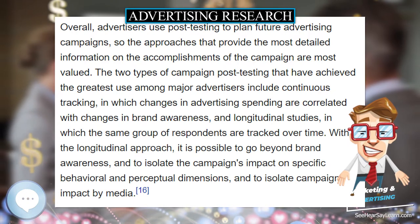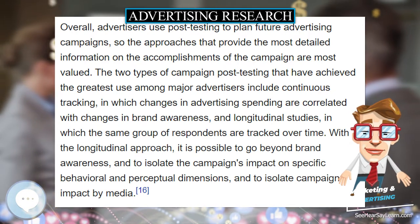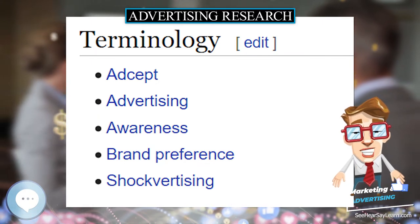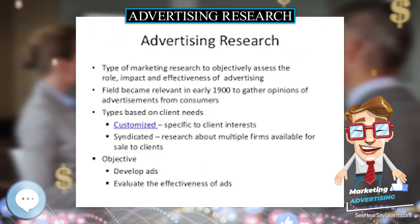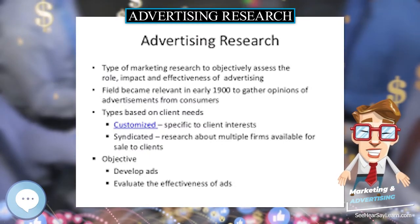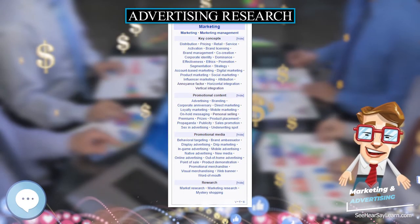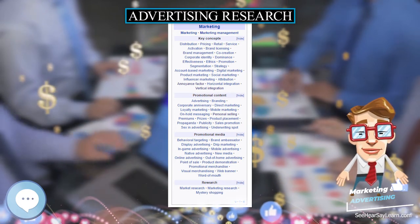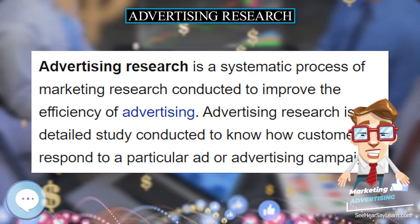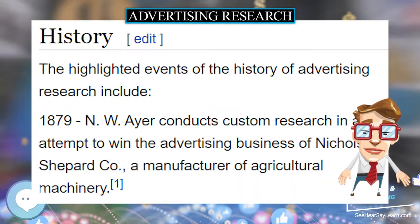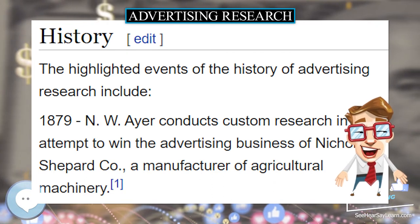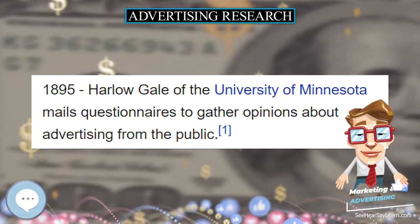In the 1920s, Dr. Daniel Starch tests reader recognition levels of magazine and newspaper advertisements and editorial content in 1922. In 1923, Dr. George Gallup begins measuring advertising readership. In the 1930s, in 1936, Dr. George Gallup validates his survey methodology by using the same tools polling voters during public elections, allowing him to successfully compare and validate his study's results against the election's results.